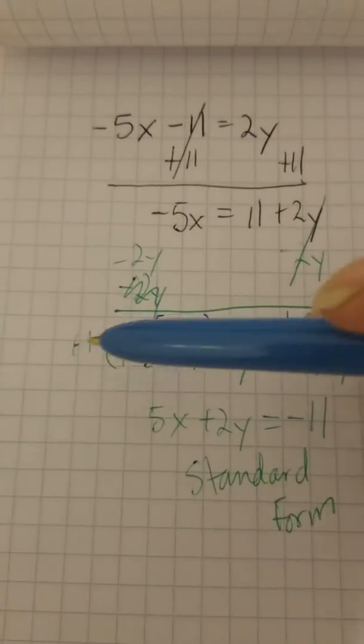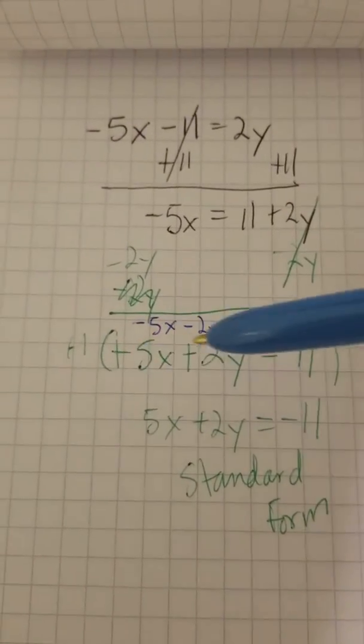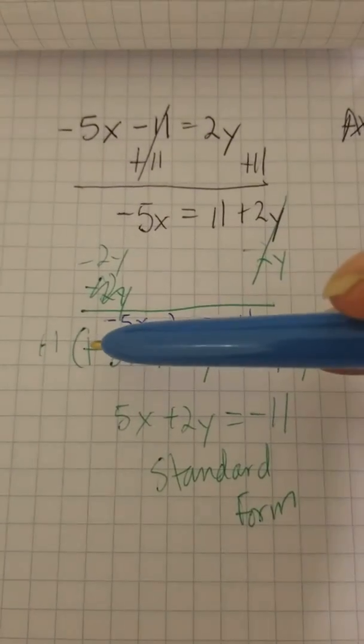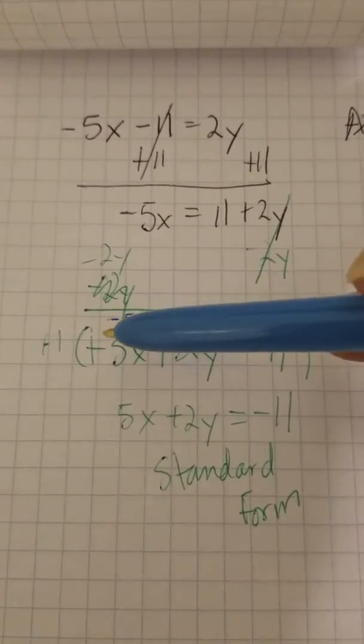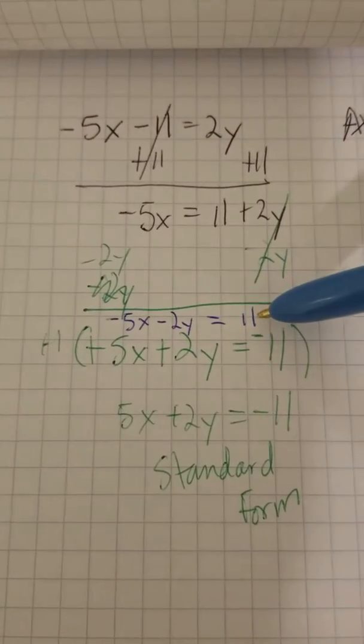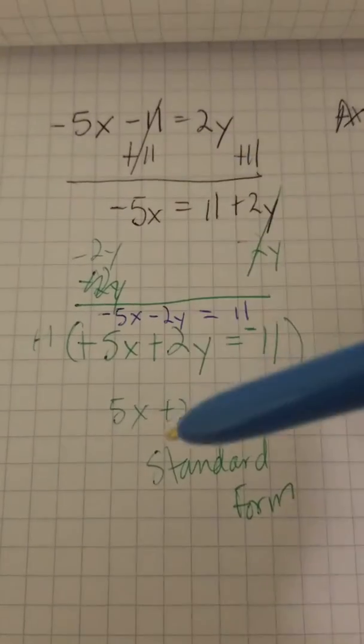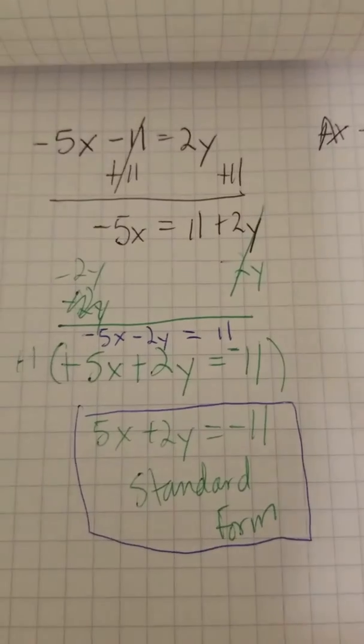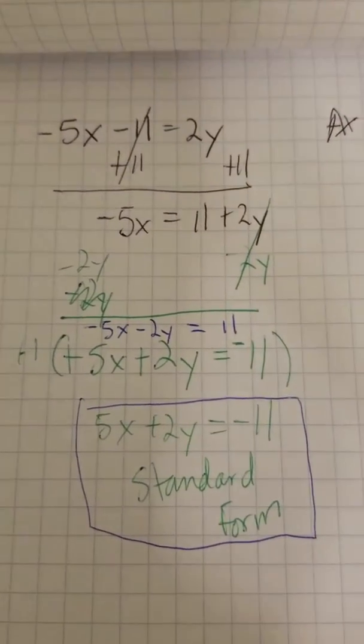And then we multiplied negative 1 to all of the terms. And that changed the sign from negative 5 to positive 5 and negative 2 to positive 2 and a positive 11 to a negative 11, which gives us our answer of positive 5X plus 2Y equals negative 11.